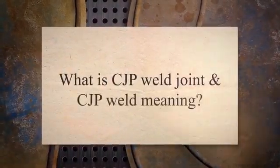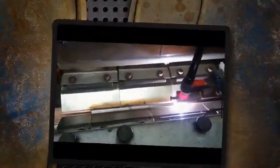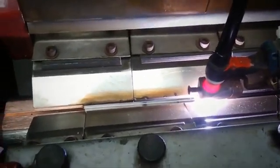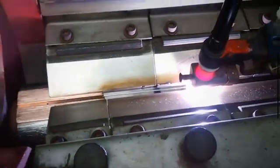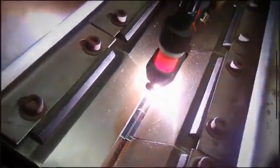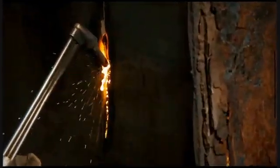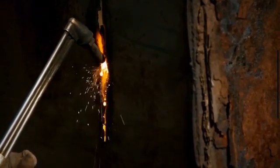CJP means complete joint penetration. CJP refers to welding joints made in groove joints or T-joints where weld metal is deposited from root to the base metal face and extends throughout the base metal thickness. 'Complete penetration' is a non-standard term for CJP weld.